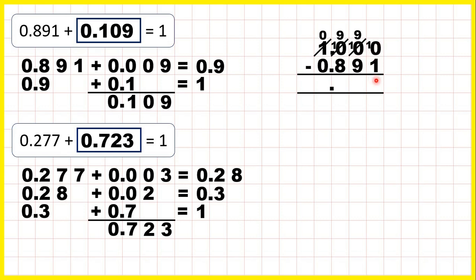Now, 10 minus 1 is 9, 9 minus 9 is 0, 9 minus 8 is 1, 0 minus 0 is 0. So, we get the answer. We get the missing number bond to one whole.